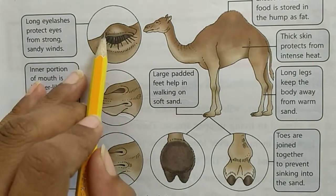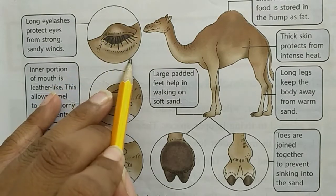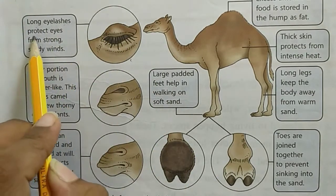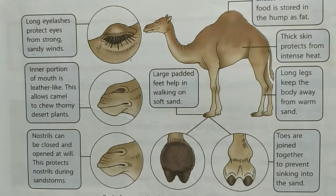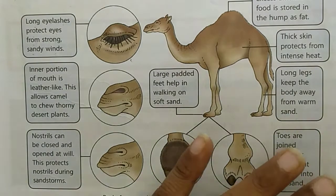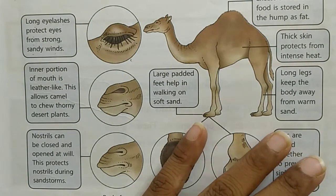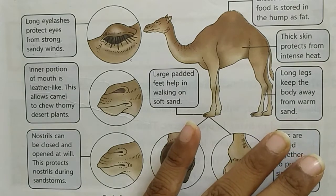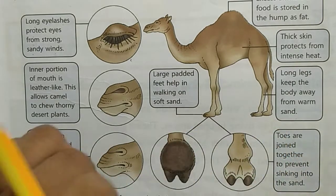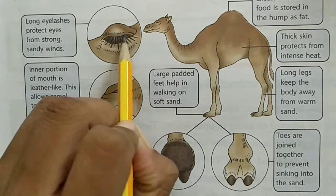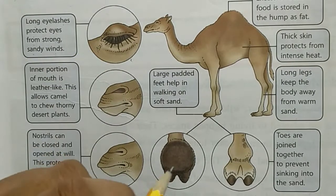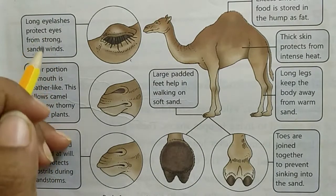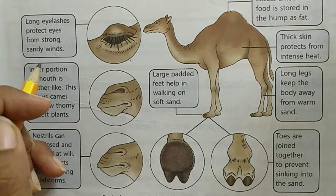So first, dekho — eye ka picture dikhrai aap ko. Long eyelashes protect eyes from strong, sandy winds. Dekho, desert region mein bahut zyada — matlab bahut sari wind hoti hai, storms aate hain, aur bahut sari dhul mitti udti hai vahapar. Toh aise eyelashes hote hain unke — dekho picture mein dikhrai — bade bade eyelashes hain, kyu? Taaki woh unke eyes ko protect kar sake dhul se.